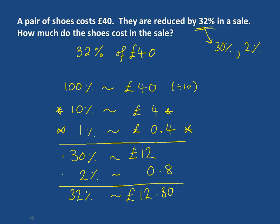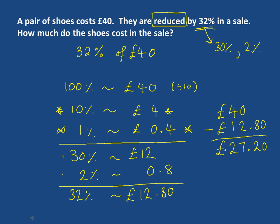The question wants us to reduce. So we need to start with our £40 and we're going to take away our £12.80. And that will give us the answer of £27.20. So after the sale, the shoes cost £27.20. Right, the trick with these questions is always starting with this 10% and 1%.